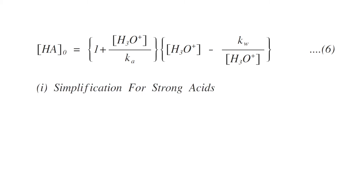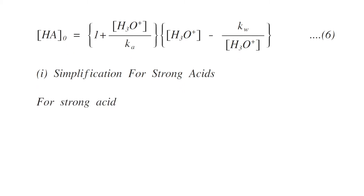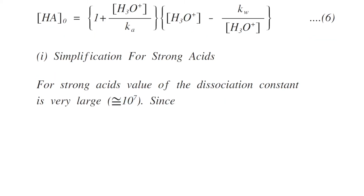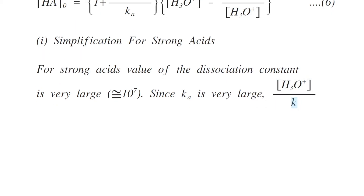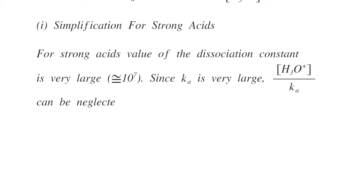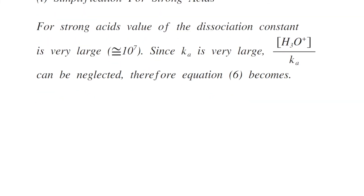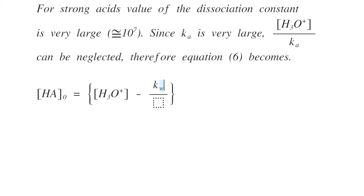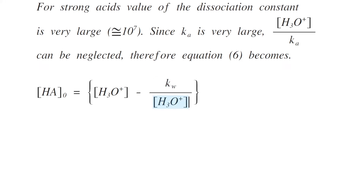For strong acids, the value of the dissociation constant Ka is very large, approximately greater than 10⁻⁷. Since Ka is very large, we can neglect the term [H₃O⁺]/Ka, and equation six becomes: C₀ = [H₃O⁺] − Kw/[H₃O⁺]. This is equation number seven.